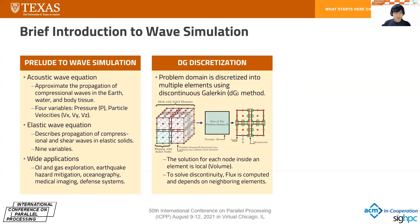Ideally, we want to compute the variables at each point in space and each point in time, which is impossible. That's why discretization comes into the picture. The problem domain is discretized into multiple smaller elements using a method called Discontinuous Galerkin, or DG. With DG, the solution for each node inside an element is local to that element. The node itself is where we evaluate the variables.